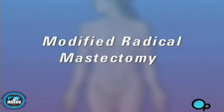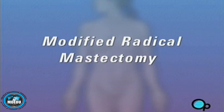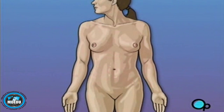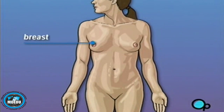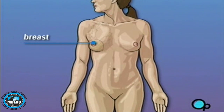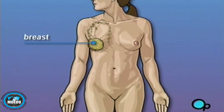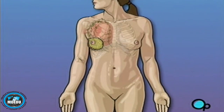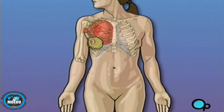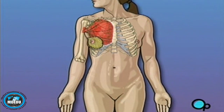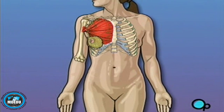Your doctor has recommended that you have a modified radical mastectomy, but what does that actually mean? Traditionally, a radical mastectomy called for the removal of the breast, surrounding tissue, and even the chest muscle below. A modified radical mastectomy is a procedure in which the breast and surrounding tissue are removed while leaving the chest muscle intact.